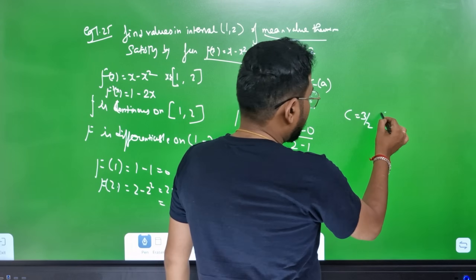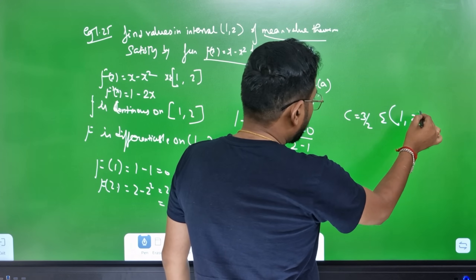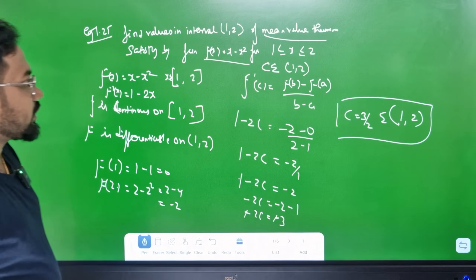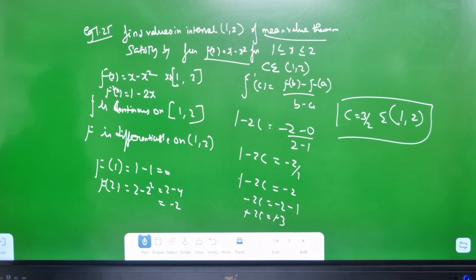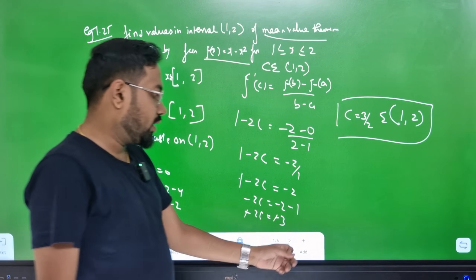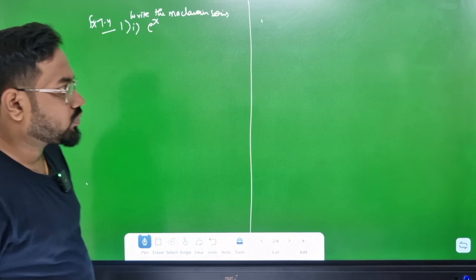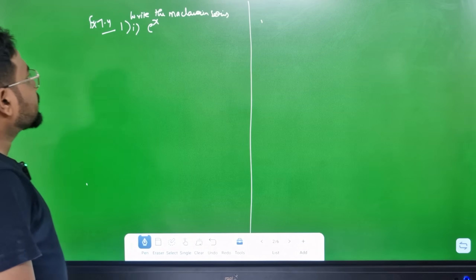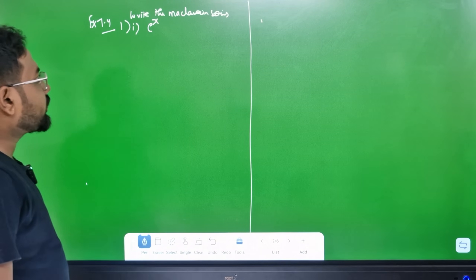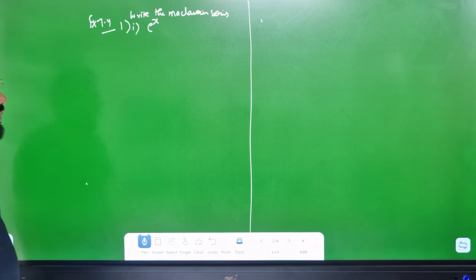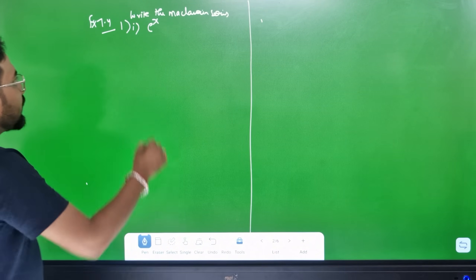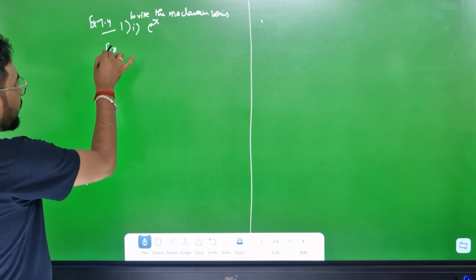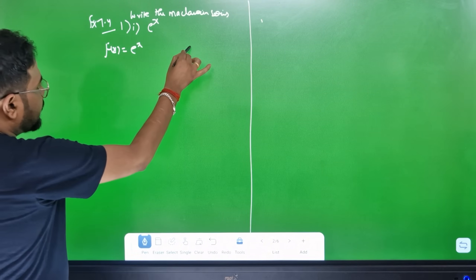We can see the answer is in the interval. This is the procedure for the Mean Value Theorem. I can give examples. This is the right interval [1,2]. We can also give another example with a 4th difference, f'(x) = e^x.